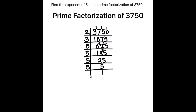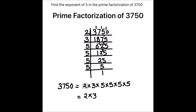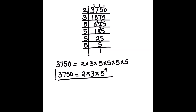Let's write this number as the product of its prime factors: 3750 equals 2 times 3 times 5 times 5 times 5 times 5 times 5. Or in exponent form, we can write it as 2 times 3 times 5 raised to the power 4. This is our final answer — let's box the answer.